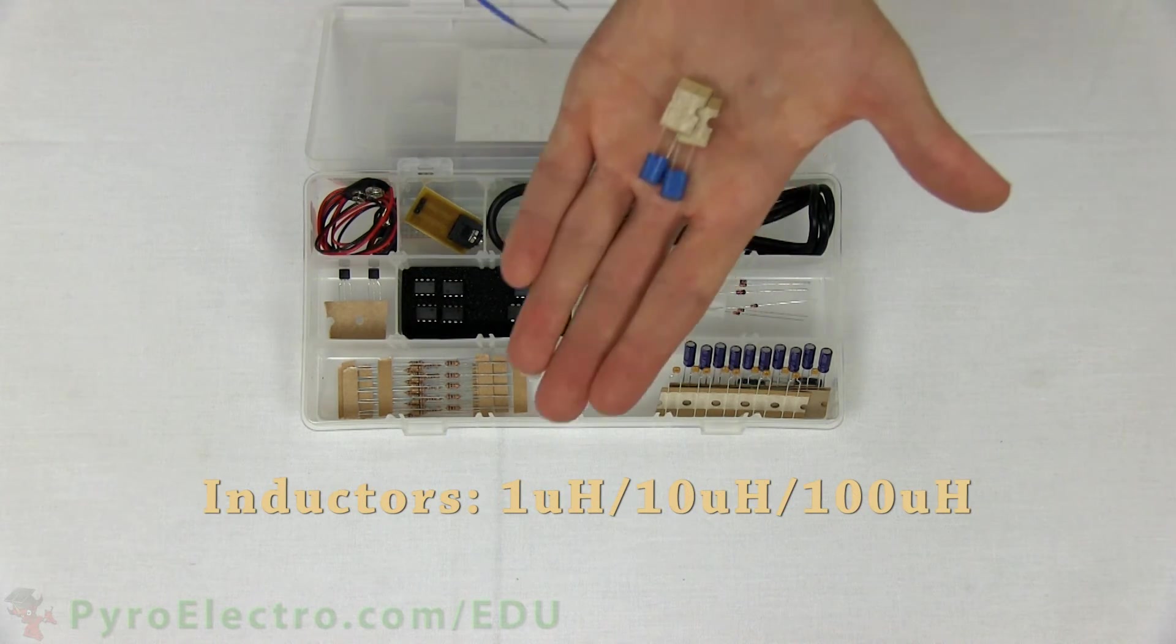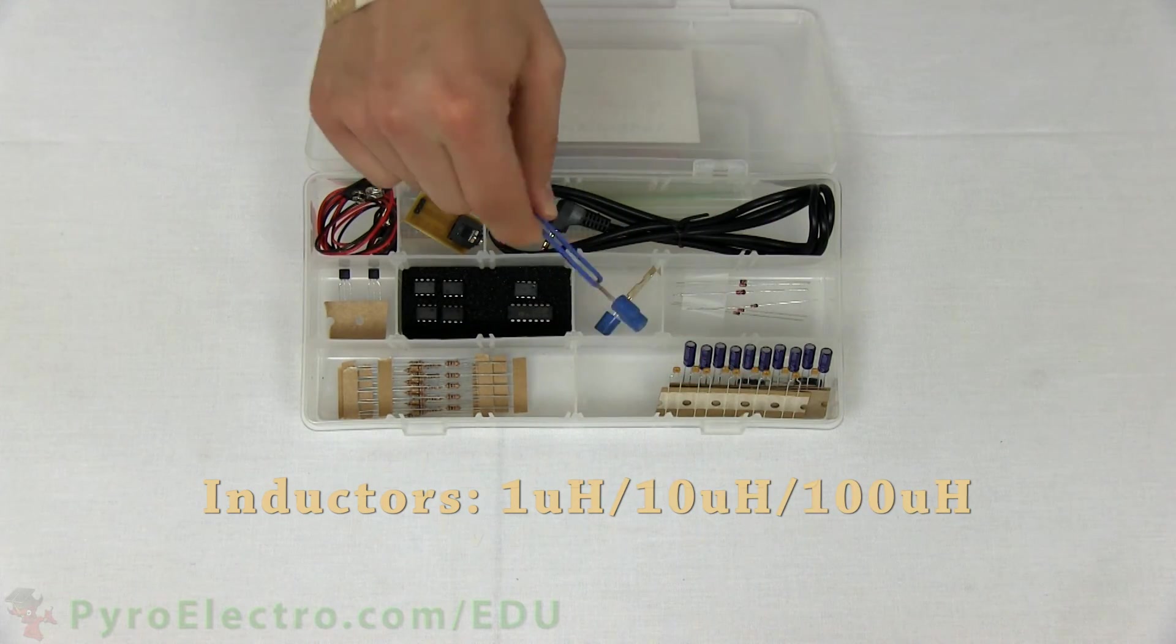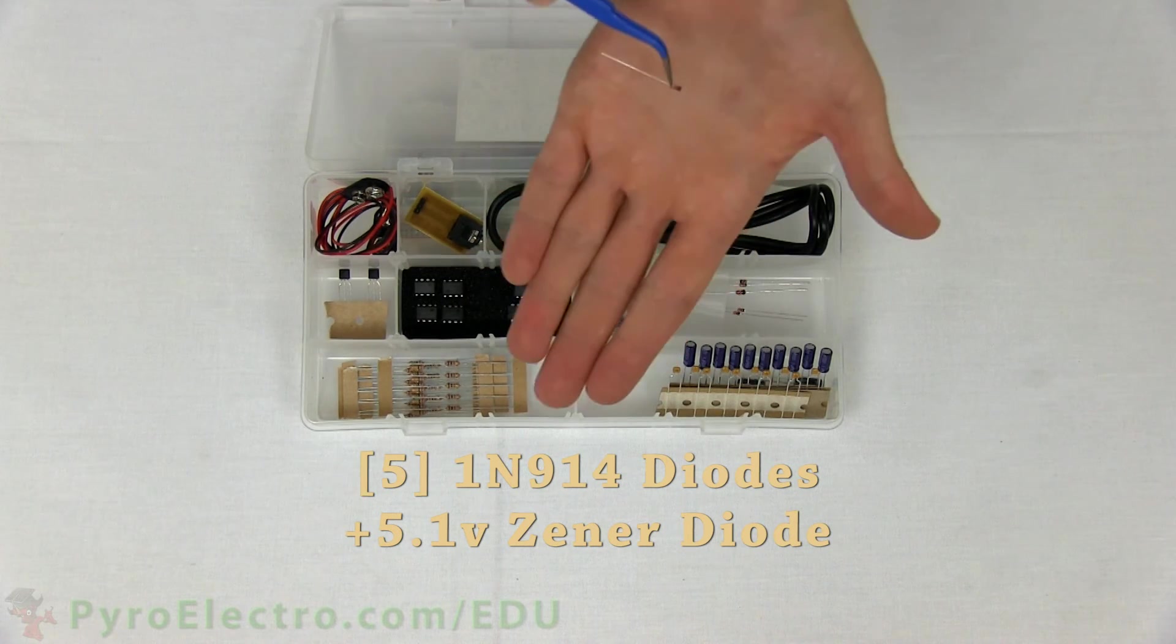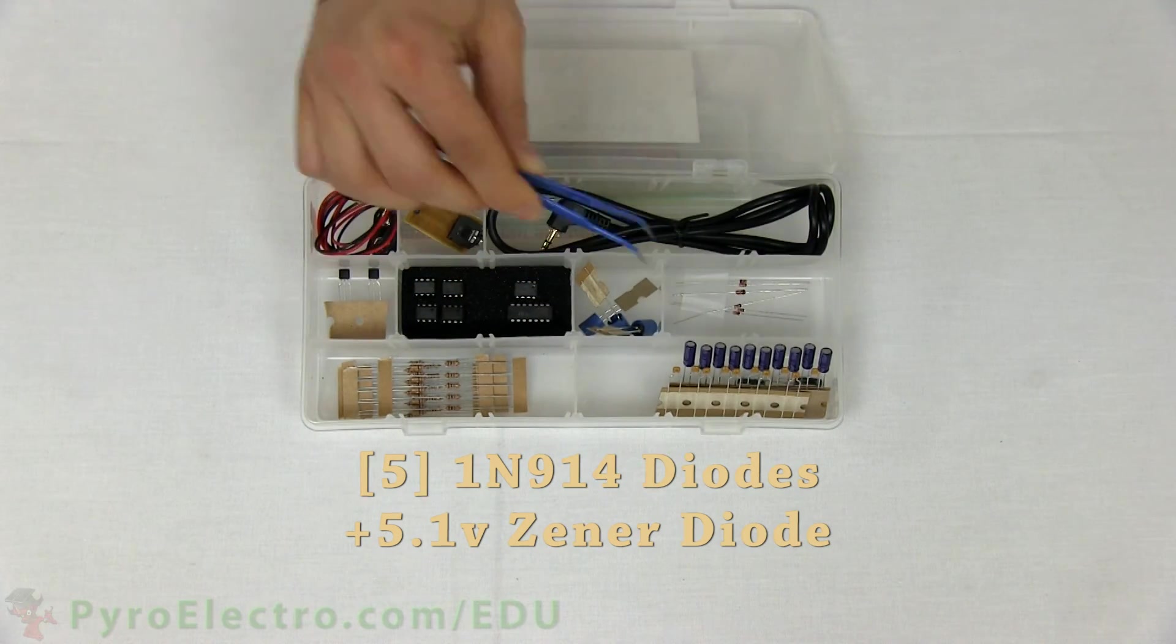Three different inductors, five small signal switching diodes, and one 5.1-volt zener diode.